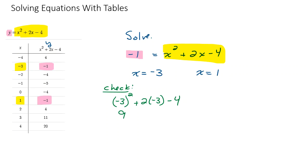So negative three squared is nine, and then this will give me plus a negative six, take away four. Nine plus negative six is three, take away four is negative one. That's what we wanted. We wanted the y value to come out to be negative one.